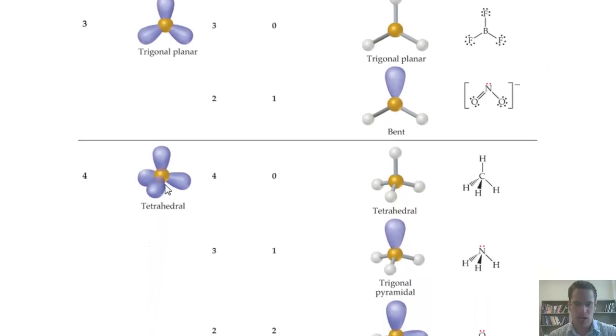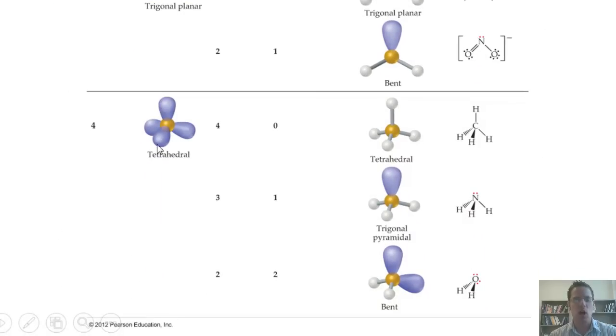Tetrahedral has a wide variety of different shapes. If all of these groups are different atoms that are bonded to the central atom, I've got four bonding domains, zero lone pair electrons, and the shape is called tetrahedral. An example is methane, shown right here.